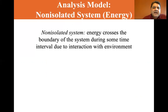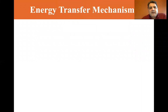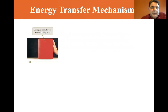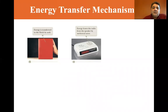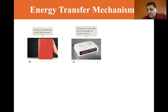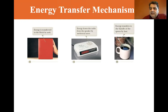In a non-isolated system, energy crosses the boundary of the system during some time interval due to interaction with the environment. For example, if you push on a block, energy is transferred to it by work — designated W. Energy can also leave a radio through the speaker as mechanical waves (MW). Sound is mechanical waves. Energy can also be transferred to the handle of a spoon by heat, designated Q.